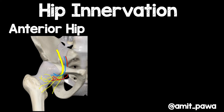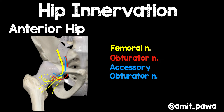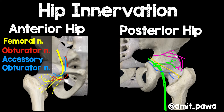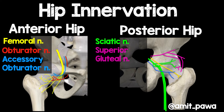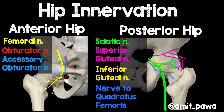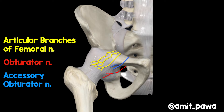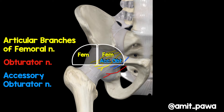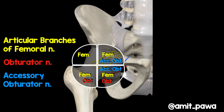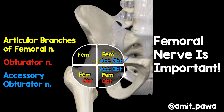Let's look at the hip innervation for the anterior hip. The most obvious nerve is the femoral nerve, but we can't forget the obturator nerve and the accessory obturator nerve — all relevant for the anterior aspect. For the back of the hip, there are additional nerves: the sciatic nerve, the superior and inferior gluteal nerves, and the nerve to quadratus femoris. Focusing on the anterior hip, there are important articular branches of the femoral, obturator, and accessory obturator nerves. The femoral nerve is by far the most important, but the others clearly also have a role.